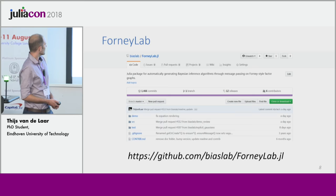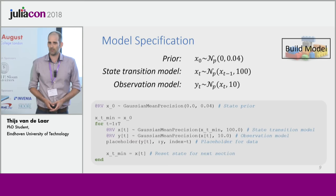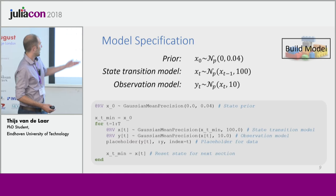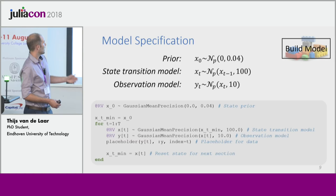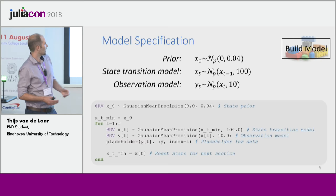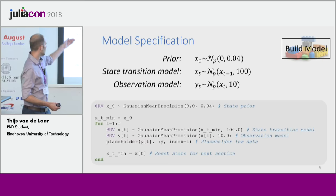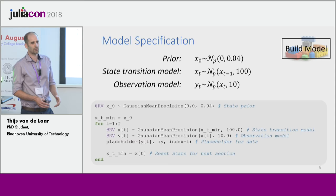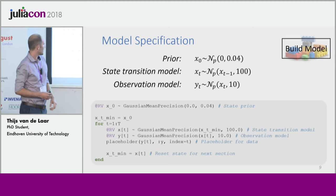Back to our example. We might propose a model where X represents the actual position of the car. Initially at time zero we are fairly uncertain, represented by X zero being a Gaussian distribution with very low precision, meaning very high uncertainty. The next line states that the current position can deviate a little from the previous position — the car is allowed to move. The third line says observations are noisy observations of the actual position. In ForniLab we write this model using the @rv macro, which defines a random variable and builds the factor graph line by line. A placeholder function indicates which quantities we actually observe — all variables Y over all times.